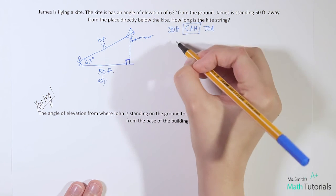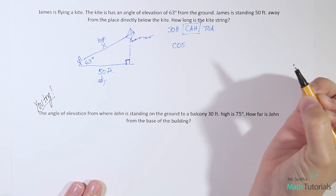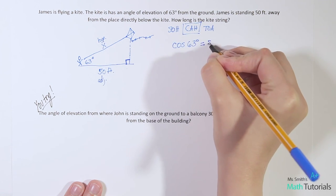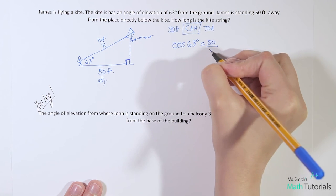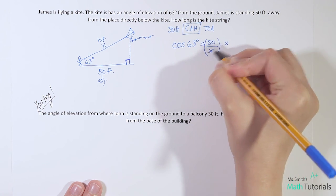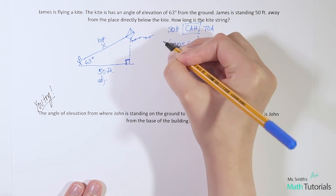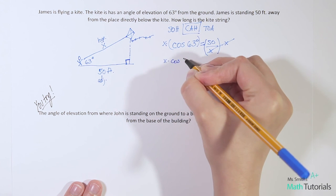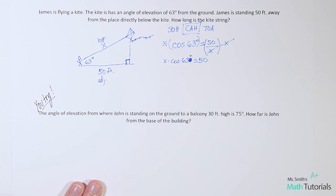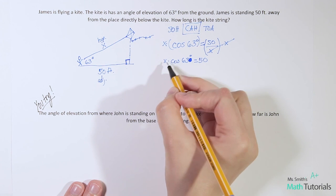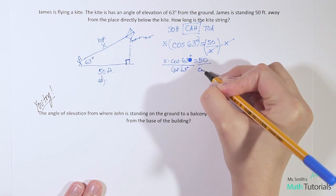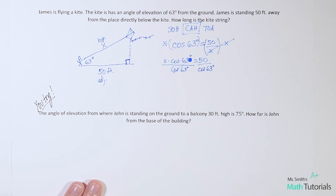I would want to use cosine. Cosine of 63 degrees is adjacent 50 over hypotenuse, in this case x. To solve this using algebra, we want to multiply both sides by the denominator so it gets rid of the denominator. So I've got x times cosine of 63 degrees equals 50, the numerator. If I want to get x alone, I can undo times by dividing each side by cosine of 63 degrees.